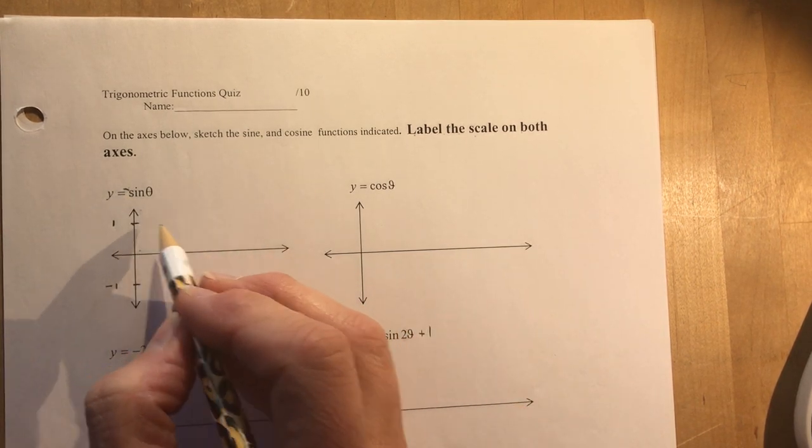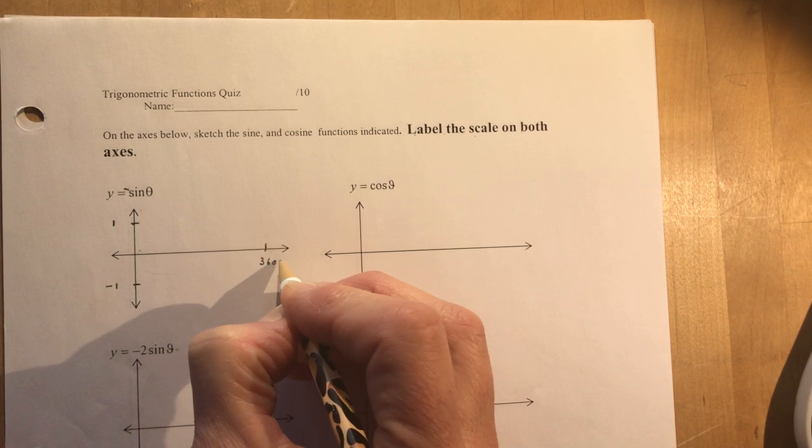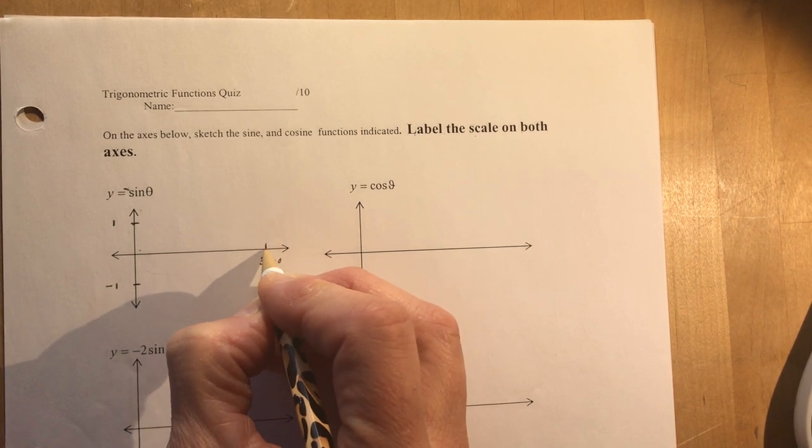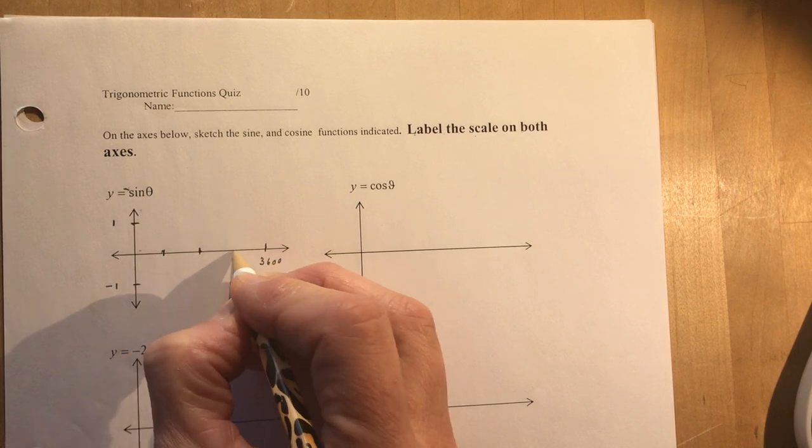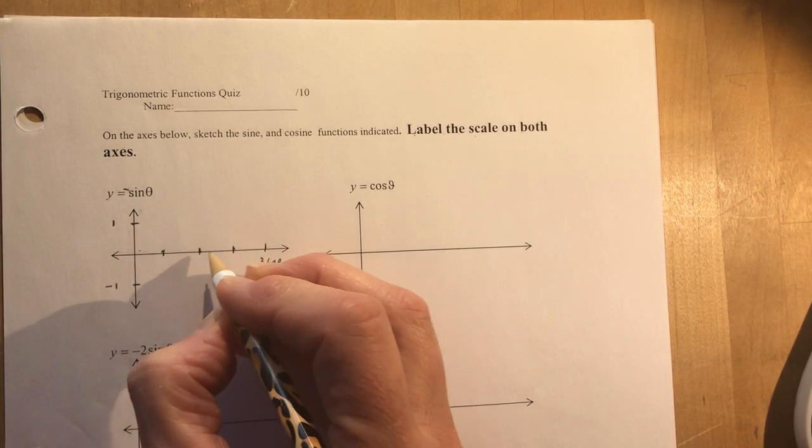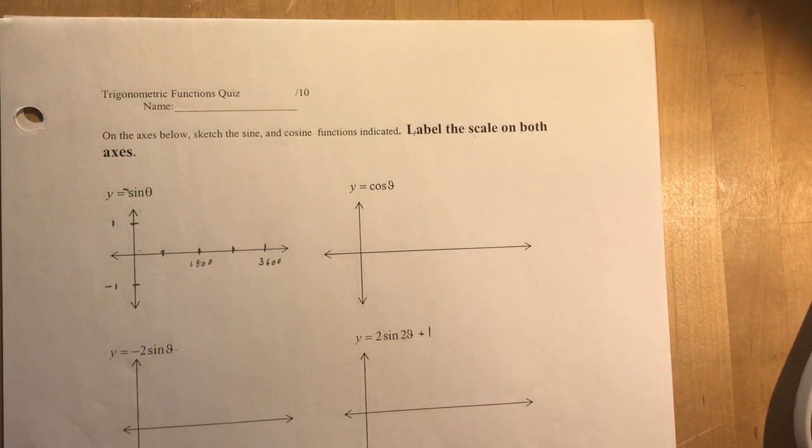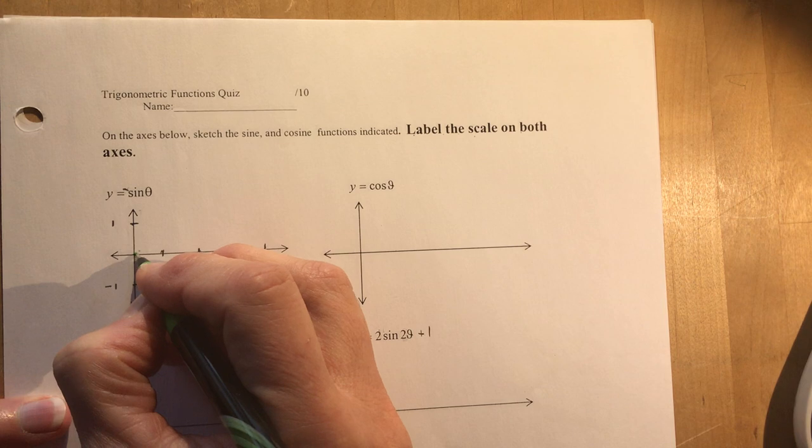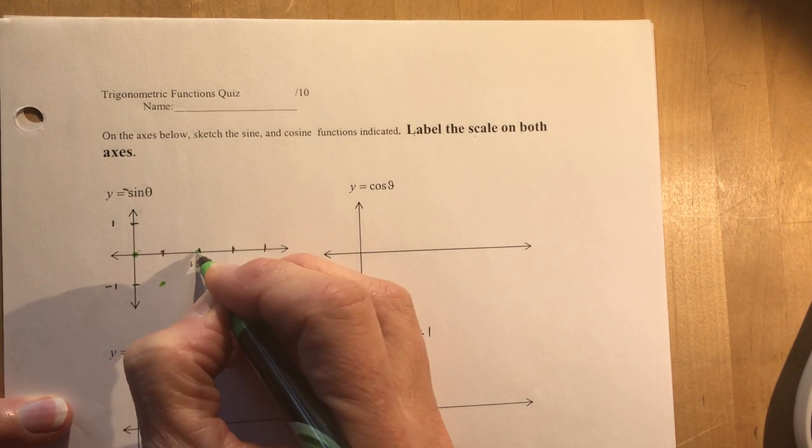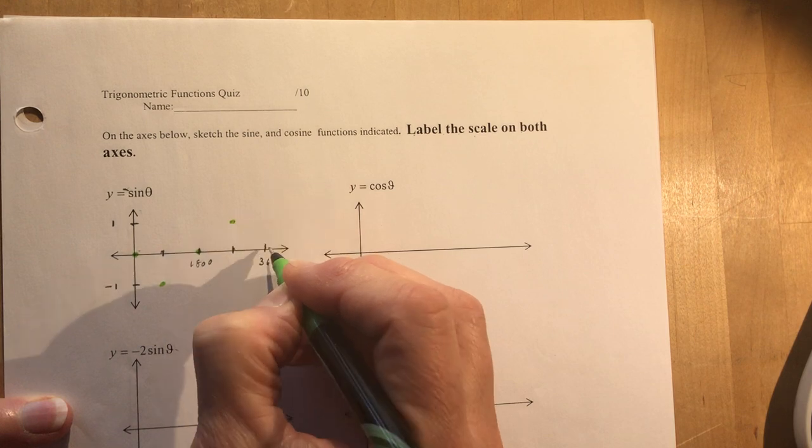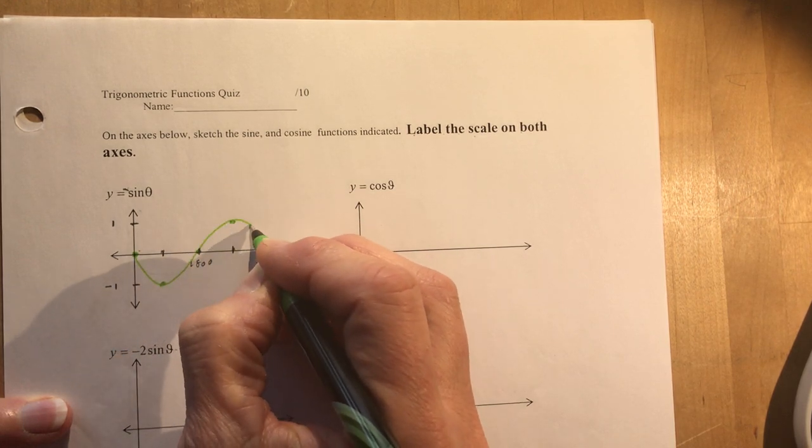So y equals negative sine theta, and I know that sine theta has a period of 360 degrees. So I make this here, I cut it in half, I cut those in half again. So I've got nice quarter divisions here. This is 180 degrees and I've got plus and minus one. So it's a negative sine function, so that means it goes down first, and back to the zero, then up and back down.